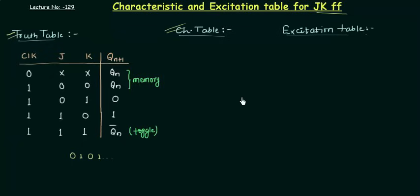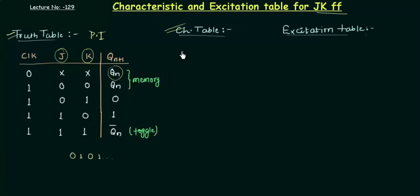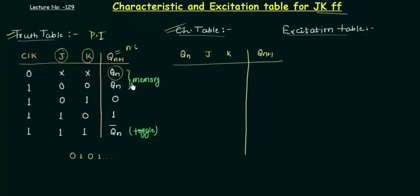Now let's move to our characteristic table. In this I am having a single output — the next state. Qn+1 is the next state, which is stored in the flip-flop. This next state is dependent upon the present input — J and K — and also on the previous state Qn. So I am having three inputs: Qn, J, and K, and depending upon these three inputs I am having a single output Qn+1. Let's find out the characteristic table using this truth table.